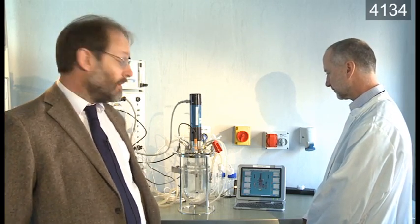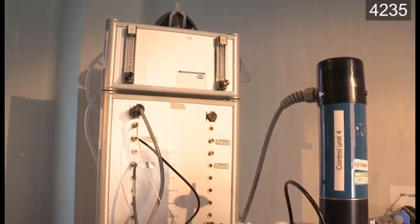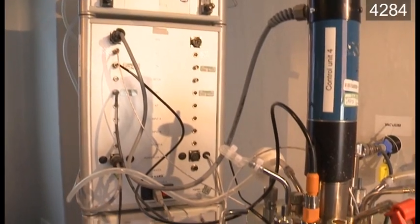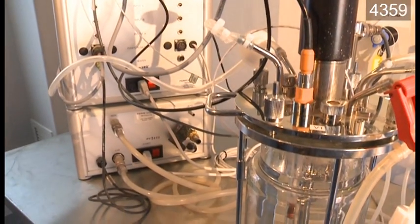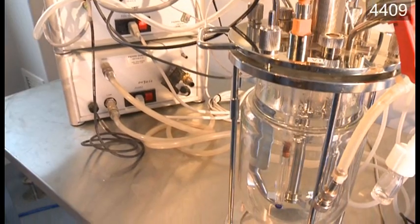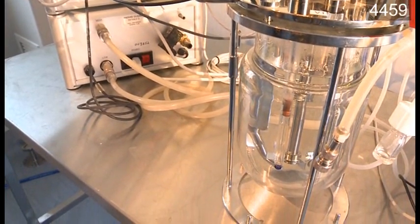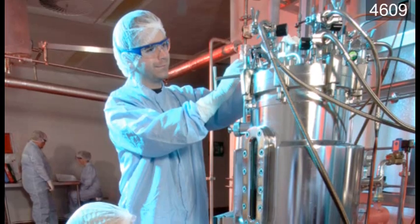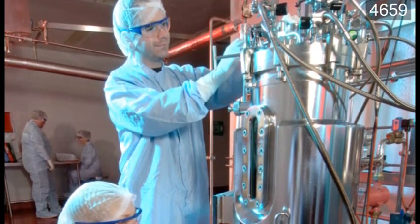In terms of process validation, what we would be looking at at this scale is looking at the critical control parameters for the fermentation. This is extremely helpful when we move through the process as we would tend to start the validation process during scale-up and look eventually within a pharmaceutical facility to do three clearly defined process validation runs.